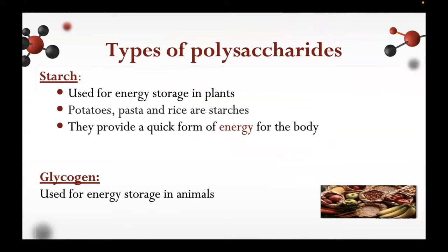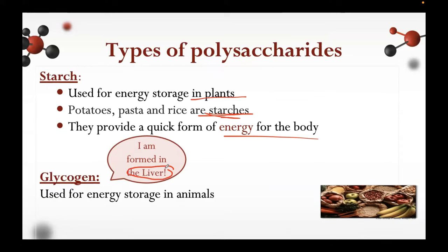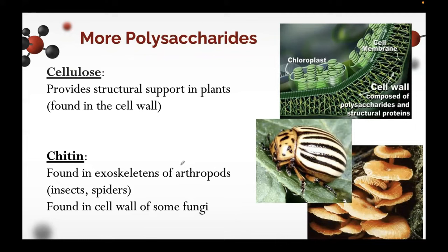The types of polysaccharides include starch, which is used for energy storage in plants. Potatoes, pasta, and rice are examples of starch — they provide a quick form of energy for the body. Glycogen is used for energy storage in animals; do not forget that glycogen is formed in the liver and stores energy from carbohydrates. Cellulose provides structural support in plants and is found in the cell wall. Chitin is found in the exoskeletons of arthropods and in the cell walls of some fungi.